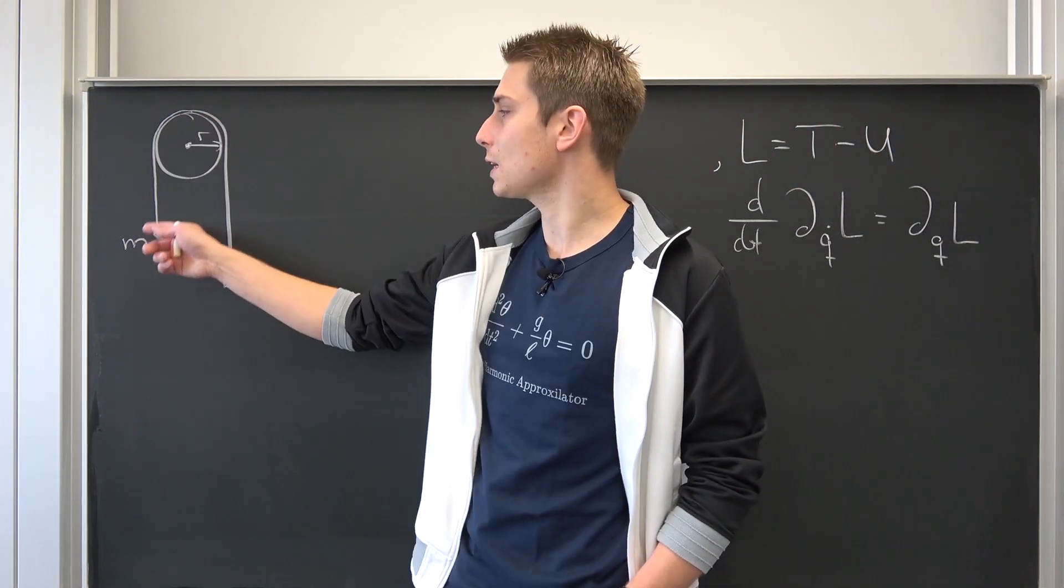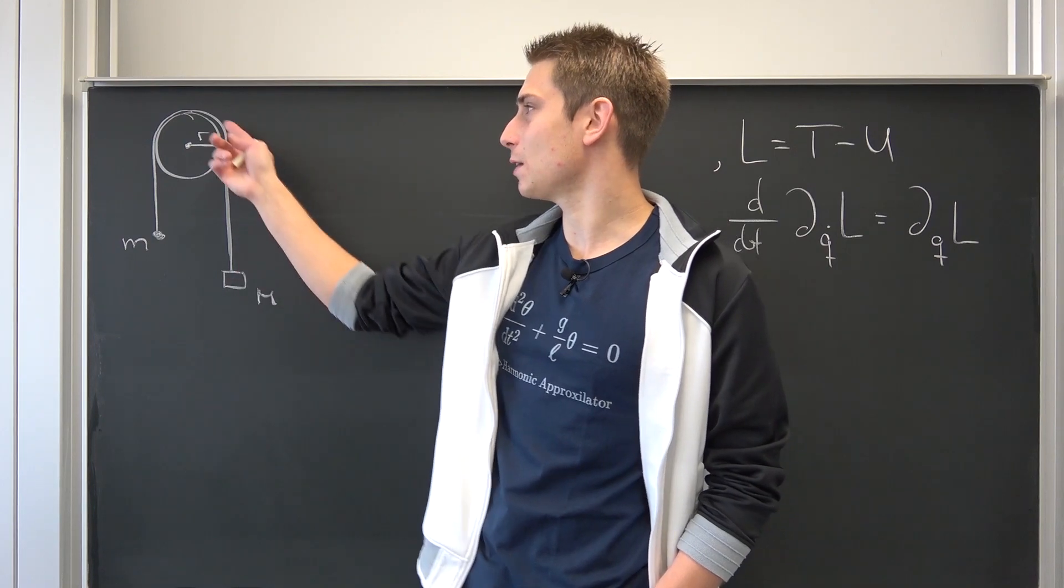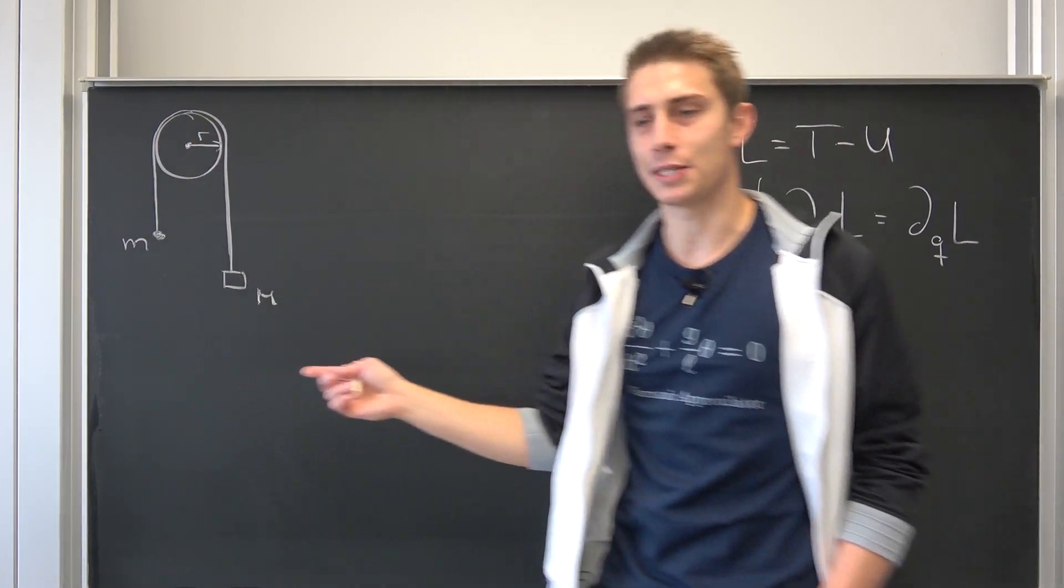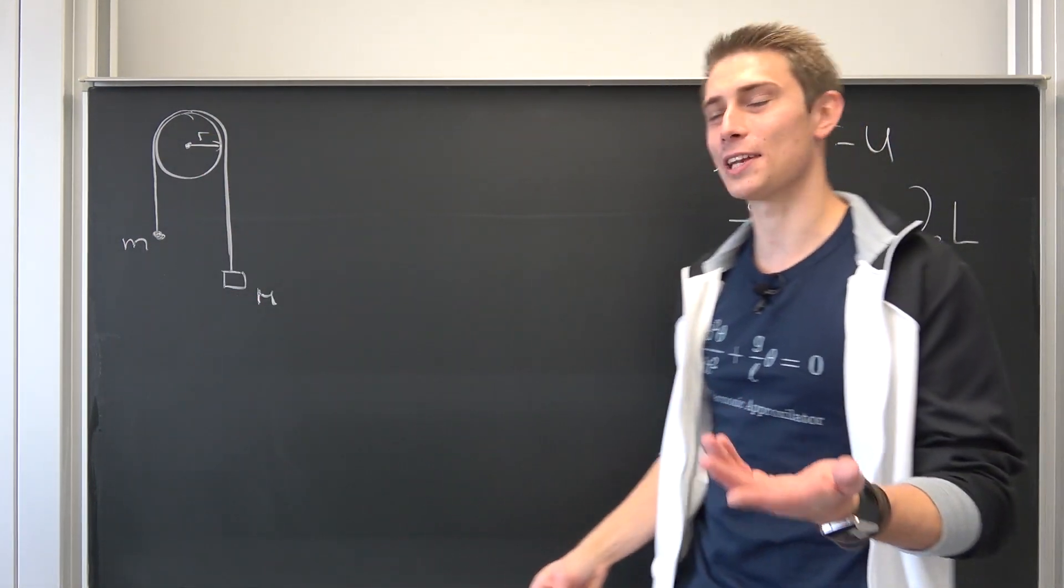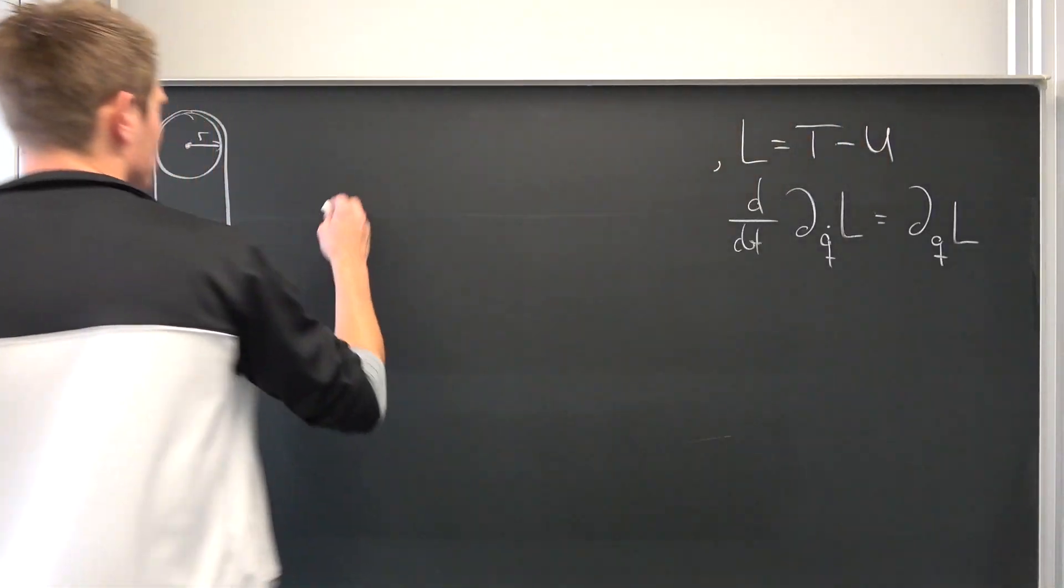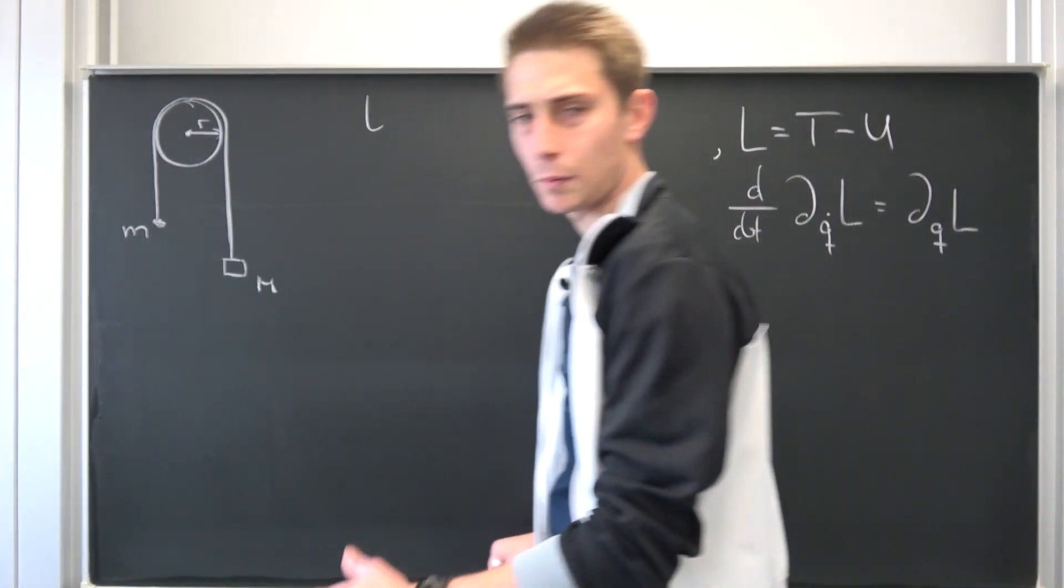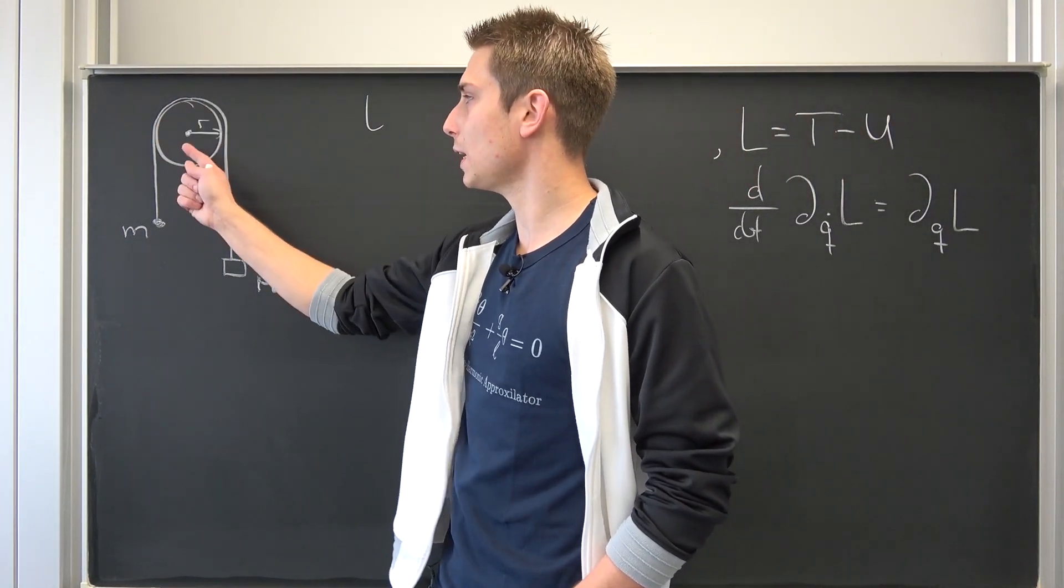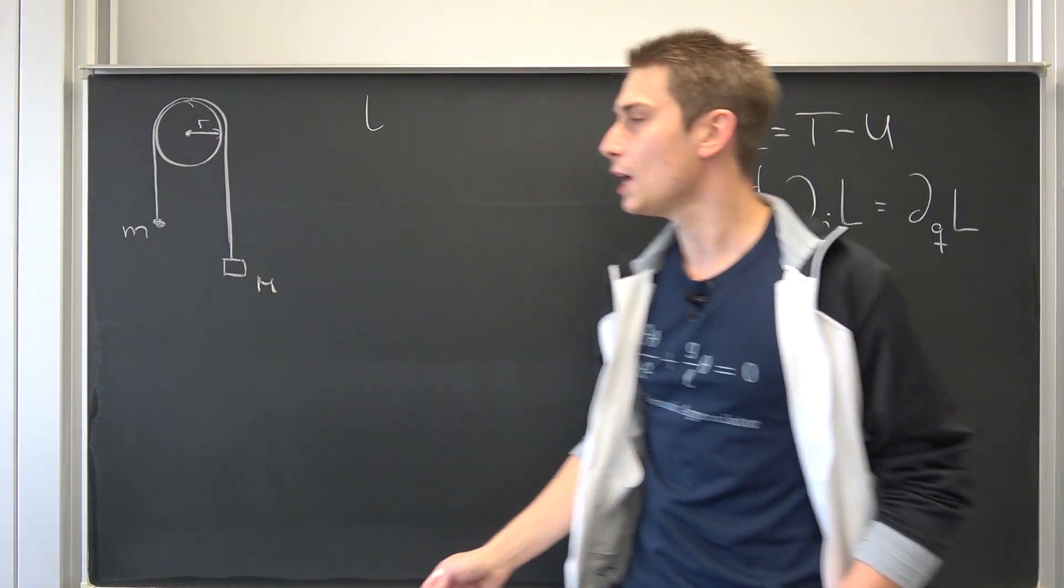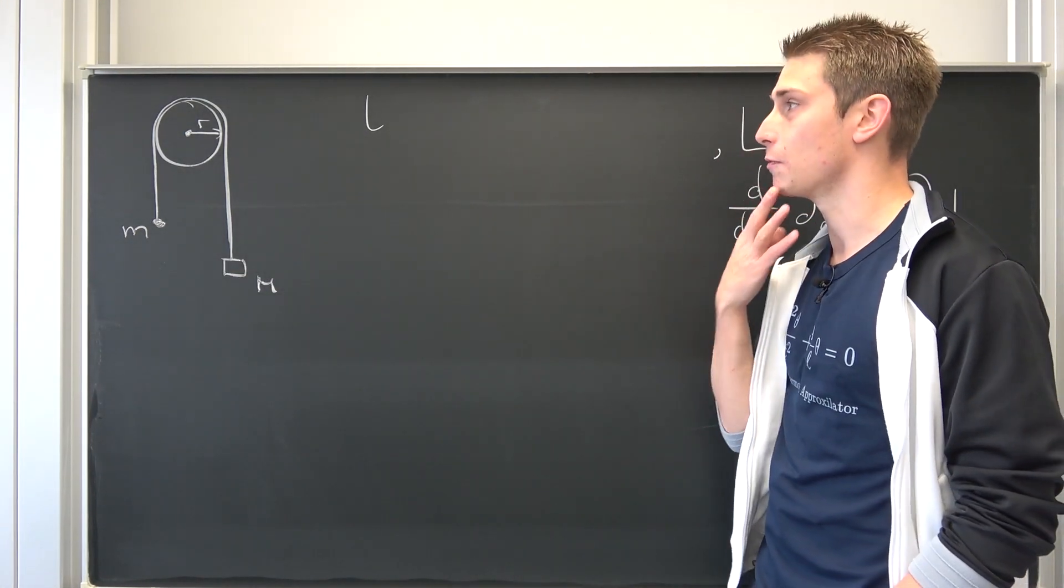We have this pulley right here. There's this rope with a certain length L. I'm going to call this length small L, and we are going to talk about what this length is exactly. Then our pulley that we have right here actually has a radius of R. And we have a big mass and we have a small mass.